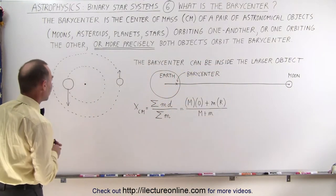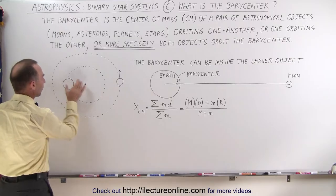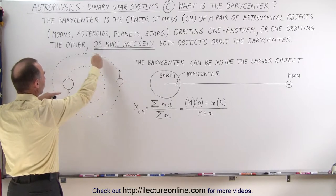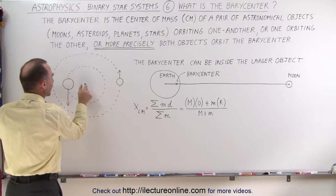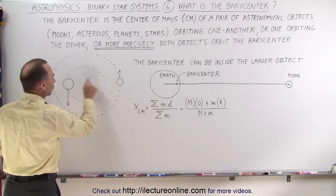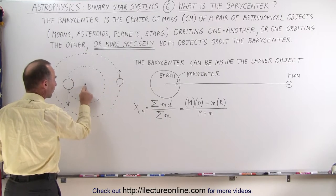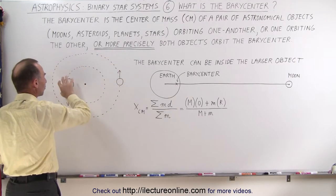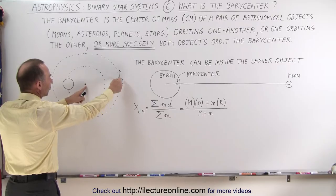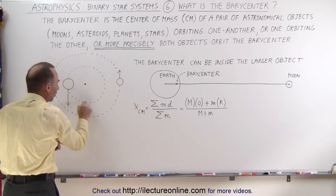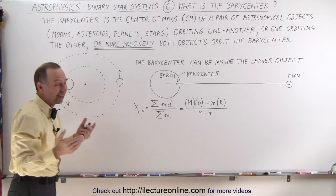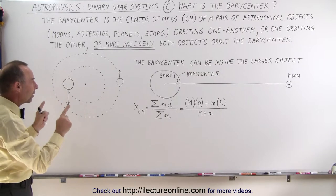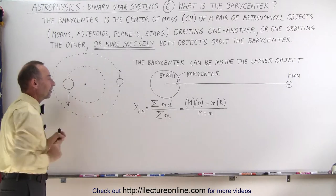Now what that means is illustrated here. We have a larger object and a smaller object. Notice that instead of the smaller object orbiting the larger object, here is the center of mass of the two objects, called the barycenter. As the smaller object orbits the larger object, it essentially orbits the barycenter, and so does the larger object. Essentially, you never have one object orbiting the other, but both objects orbiting the barycenter.